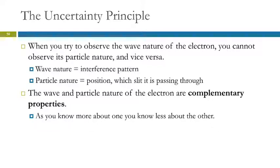So the uncertainty principle. When you try to observe the wave nature of an electron, you can't observe its particle nature. If you observe its particle nature, you can't observe its wave nature. You can't see both of them at once. The wave nature we can observe as the interference pattern in a double slit. The particle nature would be the position of the electron. Which slit is it passing through? Because if it's a particle, it has to be going through one slit or the other. It can't go through both at the same time. And yet, as a wave, it does go through both at the same time.